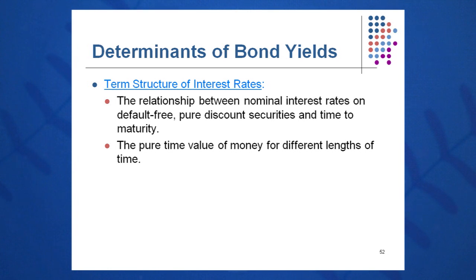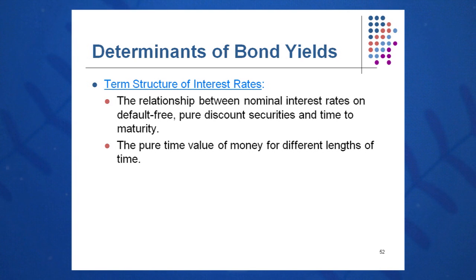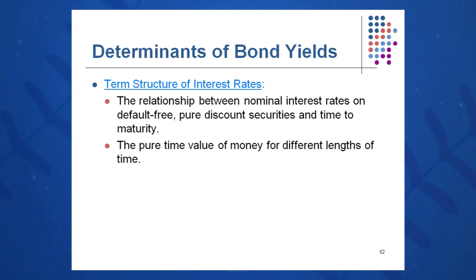The term structure of interest rates is the relationship between total interest rates on default-free, pure discount securities and time to maturity (TTM). On the y-axis you have rates, and on the x-axis you have time to maturity. One would expect this term structure most times to be upwardly sloping, because we expect lower rates for shorter-term bond instruments and a little more pay for interest rate risk going forward, as well as some inflation protection out into the future.